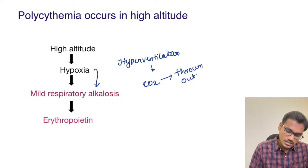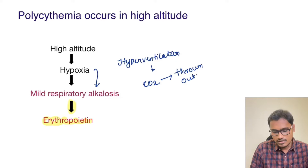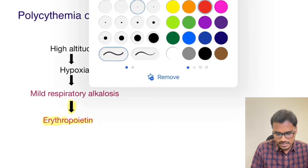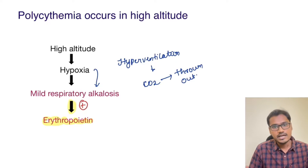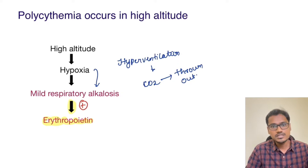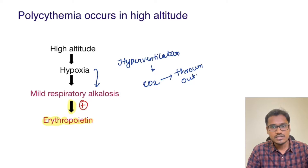This mild respiratory alkalosis is supposed to have a direct stimulatory effect on erythropoietin. Erythropoietin then increases the RBC count, increasing the circulating RBCs and causing polycythemia.